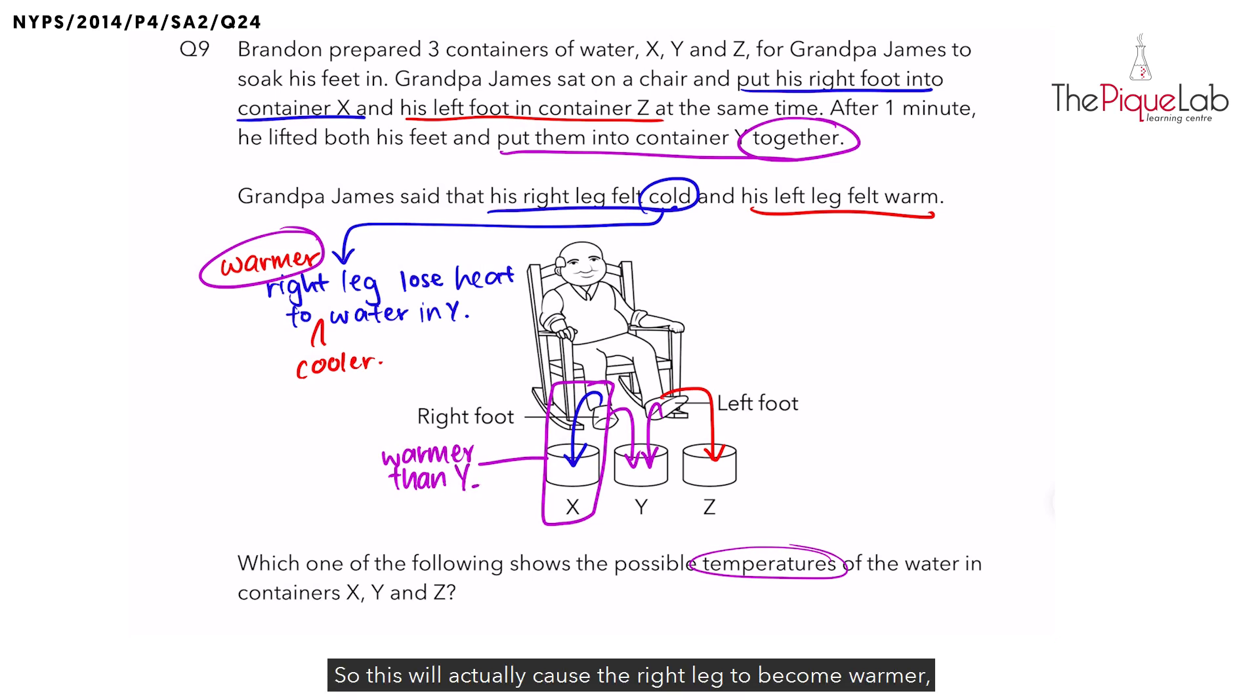So this will actually cause the right leg to become warmer. And when we transfer the right leg from X to Y, the warmer right leg will then lose heat to the cooler water in Y to become colder. Now once that's clear, let's move on to the left leg.